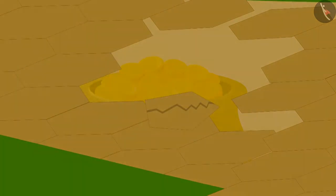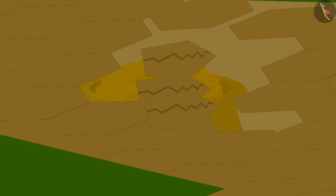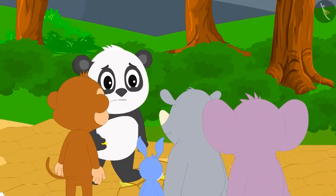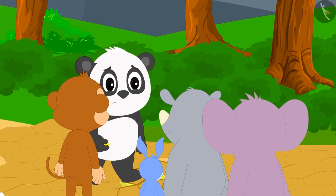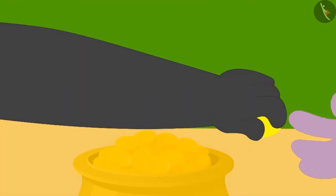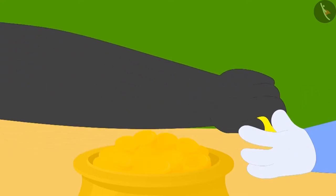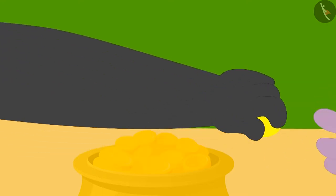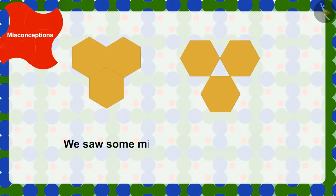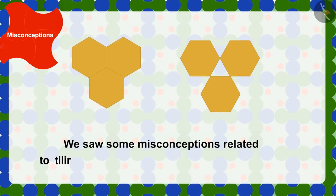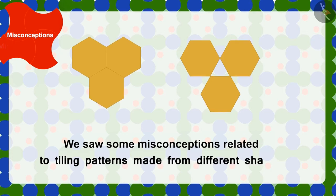Golu kept trying the whole night but he could not make a pattern with those tiles. In the morning, a big crowd had gathered around Golu and he had to share the treasure with all those people. Children, we saw some misconceptions related to the tiling pattern made from different shapes.